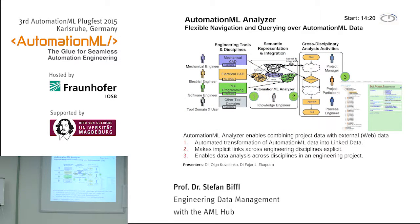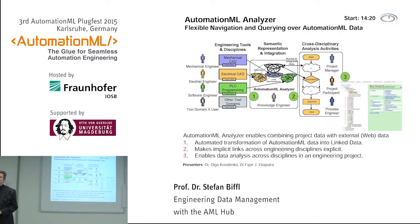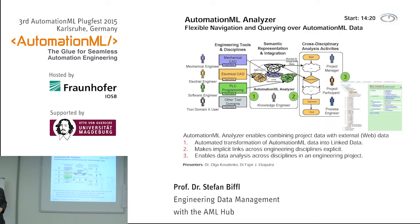Last but not least, the AutomationML Analyzer shows how AutomationML data can be transformed into linked data. In the semantic web, linked data is used to represent semantics on the worldwide web, and the same representation can be used for AutomationML or engineering data. Having this makes it easier to link external data to automate engineering processes.